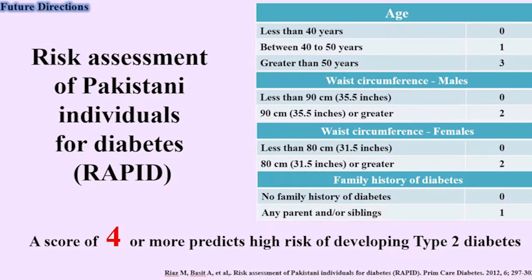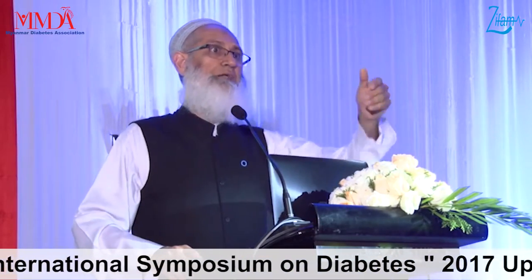So we developed this score, which is called RAPID score — Risk Assessment of Pakistani Individuals for Diabetes. India has developed an India score with Ramachandran leading, and there is a Finland score by Yaku Tomliheto. There is an Australian score by Stephen Collegary, an English score by Kamlesh Kunti, and a German score by Peter Schwartz.